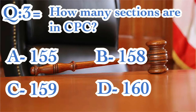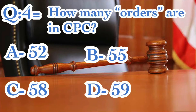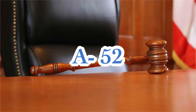Question number three: how many sections are in CPC? A) 155, B) 158, C) 159, D) 160. The correct answer is B: 158. Question number four: how many orders are in CPC? A) 52, B) 55, C) 58, D) 59. The correct answer is A: 52.